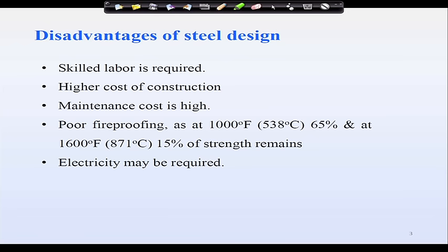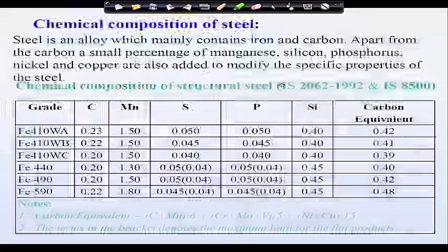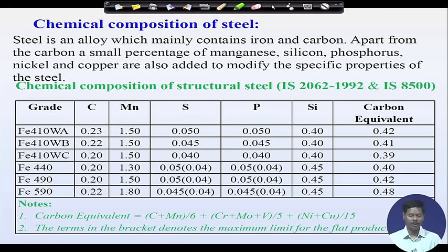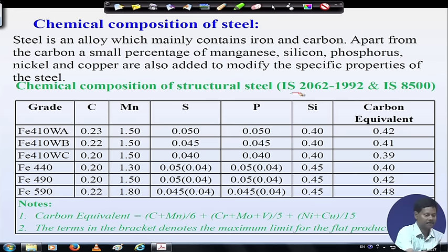Those are the few advantages and disadvantages of using steel as a structural material. Coming to chemical composition — steel is an alloy which mainly contains iron and carbon. Apart from carbon, small percentages of manganese, silicon, phosphorus, nickel, and copper are also added to modify the specific properties of steel.